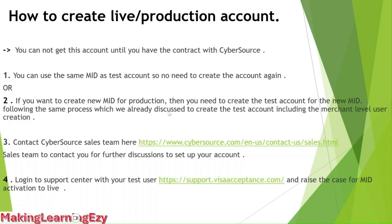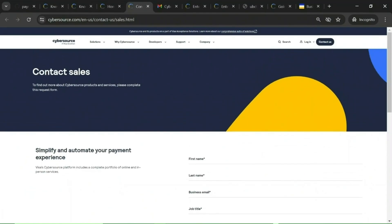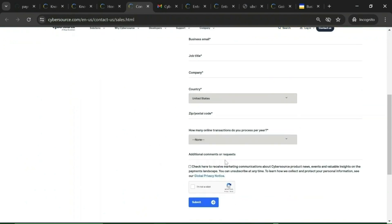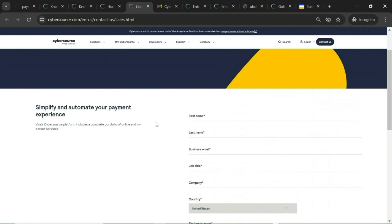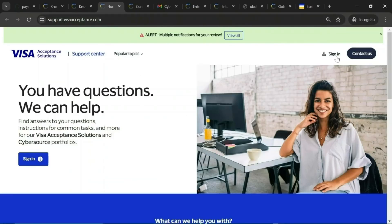Follow the same process we already discussed to create the test account — including merchant level user creation with the new MID you will use for production. Once you have finalized the MID or organization ID for production, contact the CyberSource team. Click on the Contact Sales link, fill up all the details, and submit. The CyberSource sales team will contact you for further discussions. After that, log into the support center with your test user and raise a case for MID activation to live.